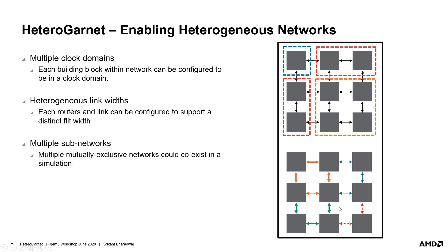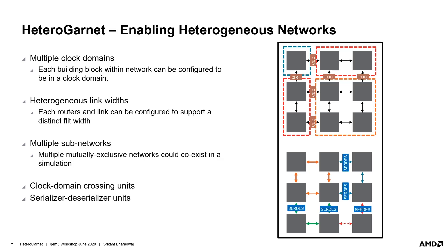Unlike Garnet, Heterogarnet allows creation of sub-networks which are mutually exclusive. This is helpful when creating chiplet configurations where the intra-chiplet network is not connected directly to the network in the interposer. Similarly, in CPU plus discrete GPU simulations, one would require an exclusive GPU interconnect system. Heterogarnet adds two new building blocks — the clock domain crossing unit and the serializer deserializer unit. These units provide the synchronization services at the clock and link width boundaries, and must be explicitly instantiated during configuration by the user.